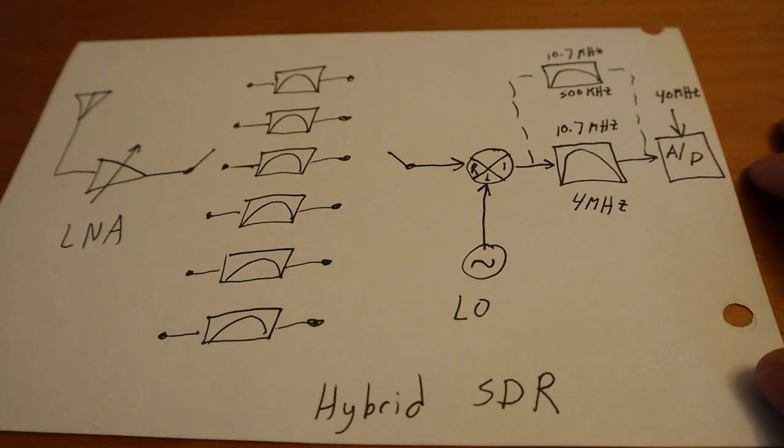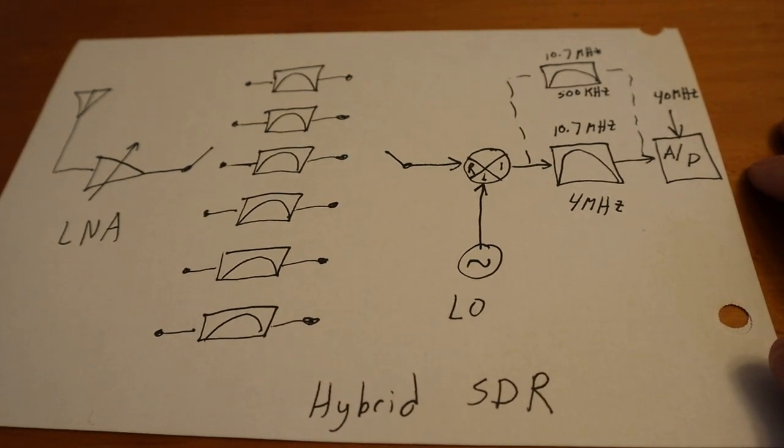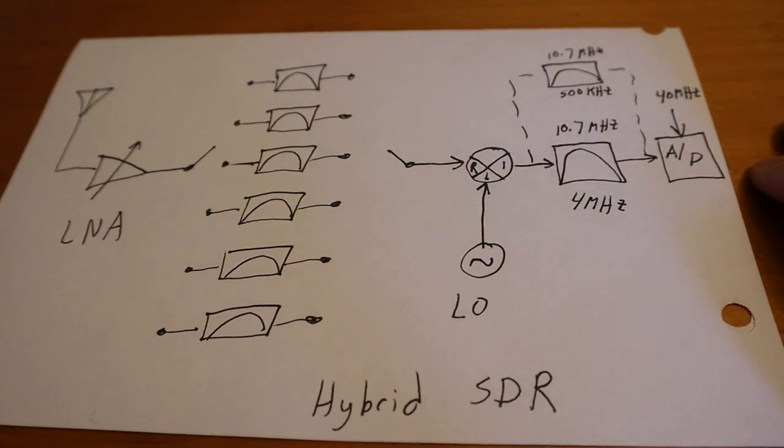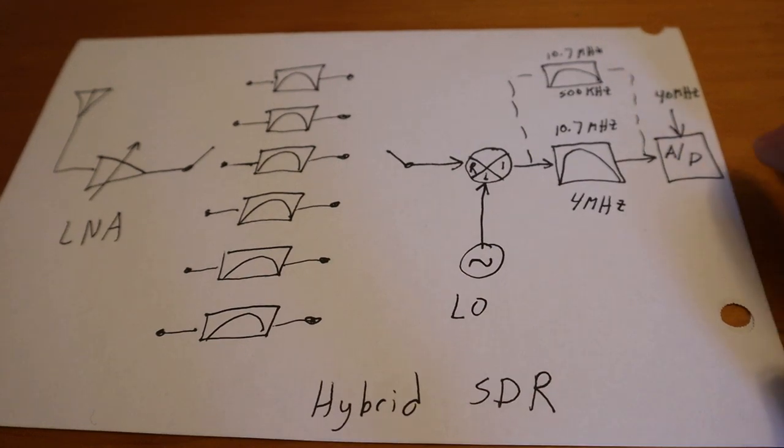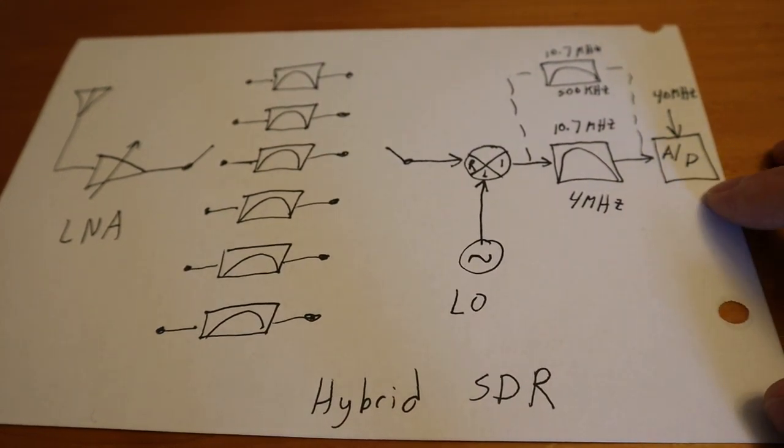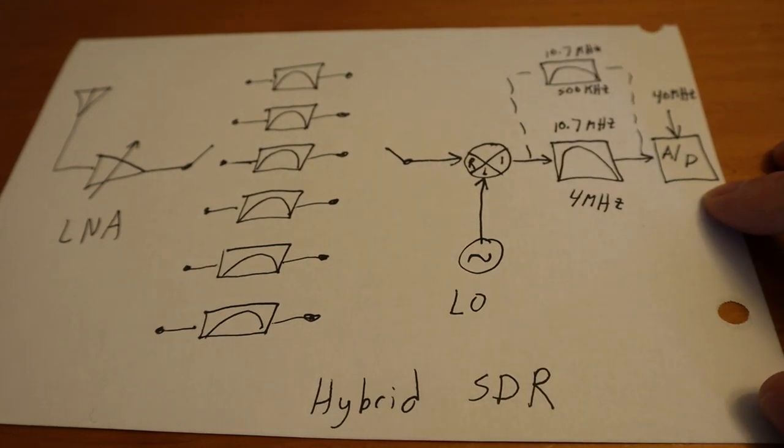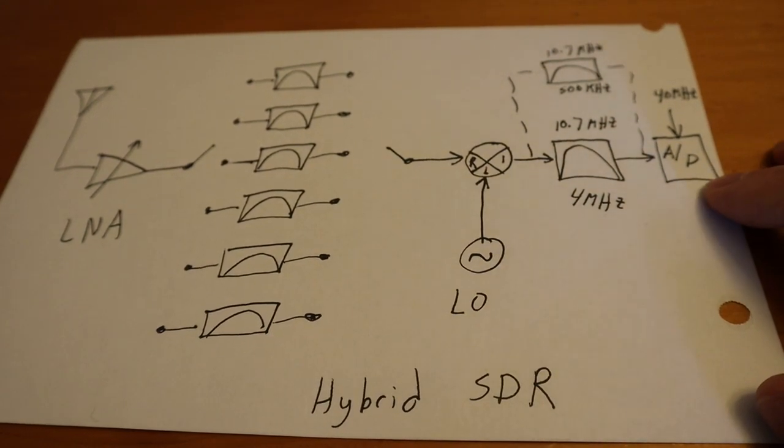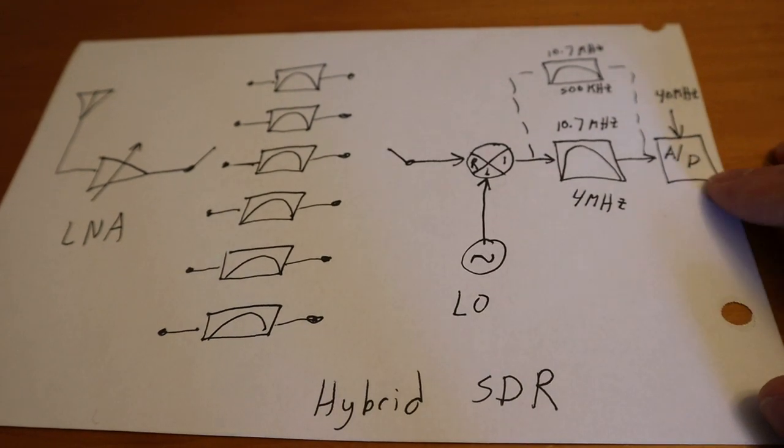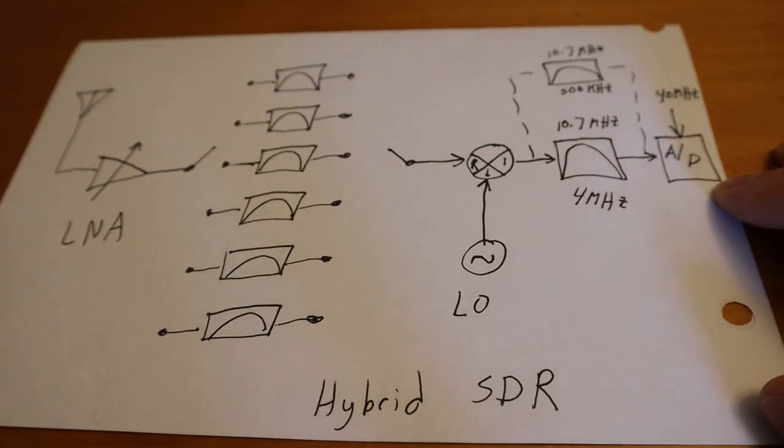So hopefully that explains the difference between a pure SDR where it's essentially the A to D right out to the antenna, and this would be a hybrid SDR where we're kind of using some of the old analog here. And then all the final filtering, demodulation, signal processing, noise reduction, etc., is all done back here in the DSP.